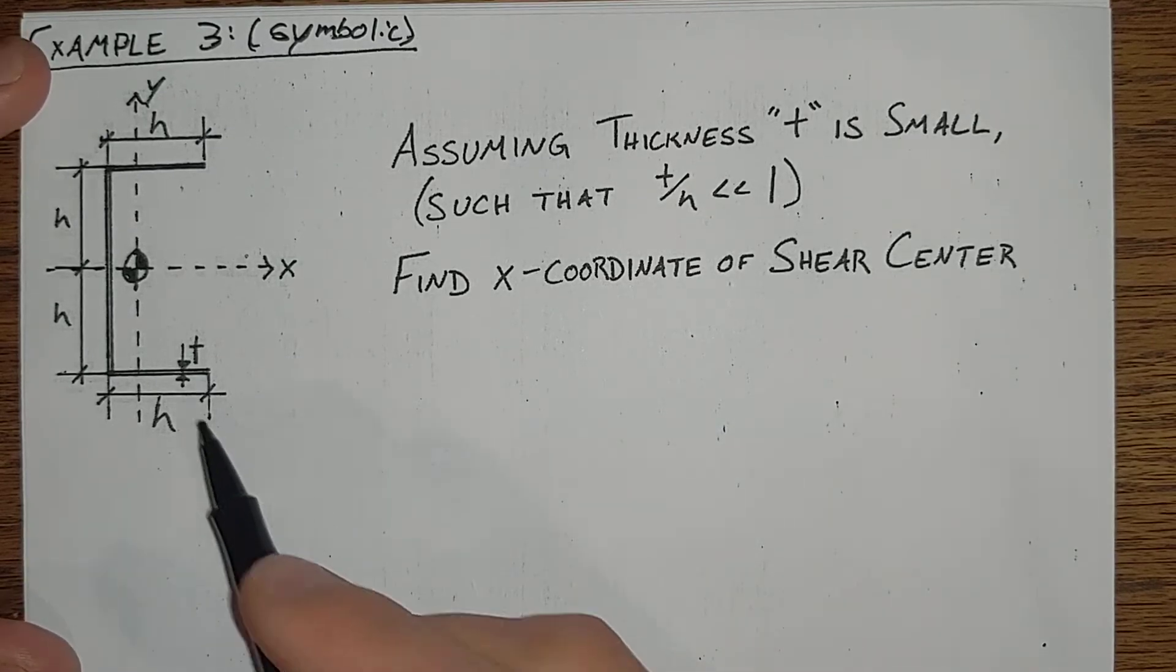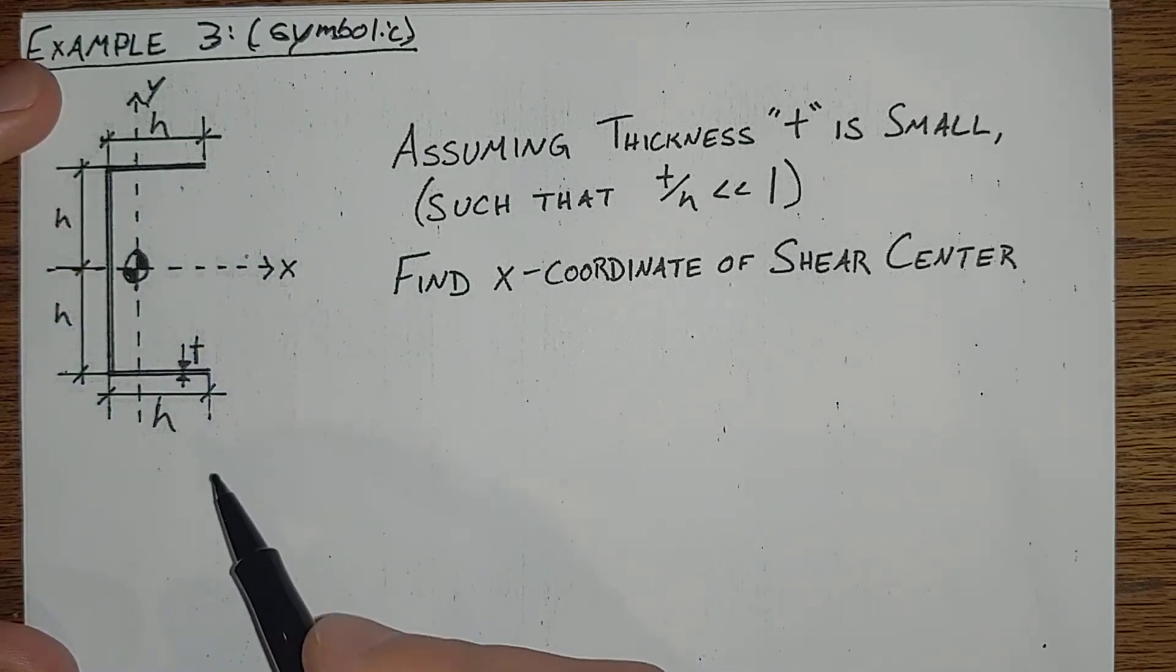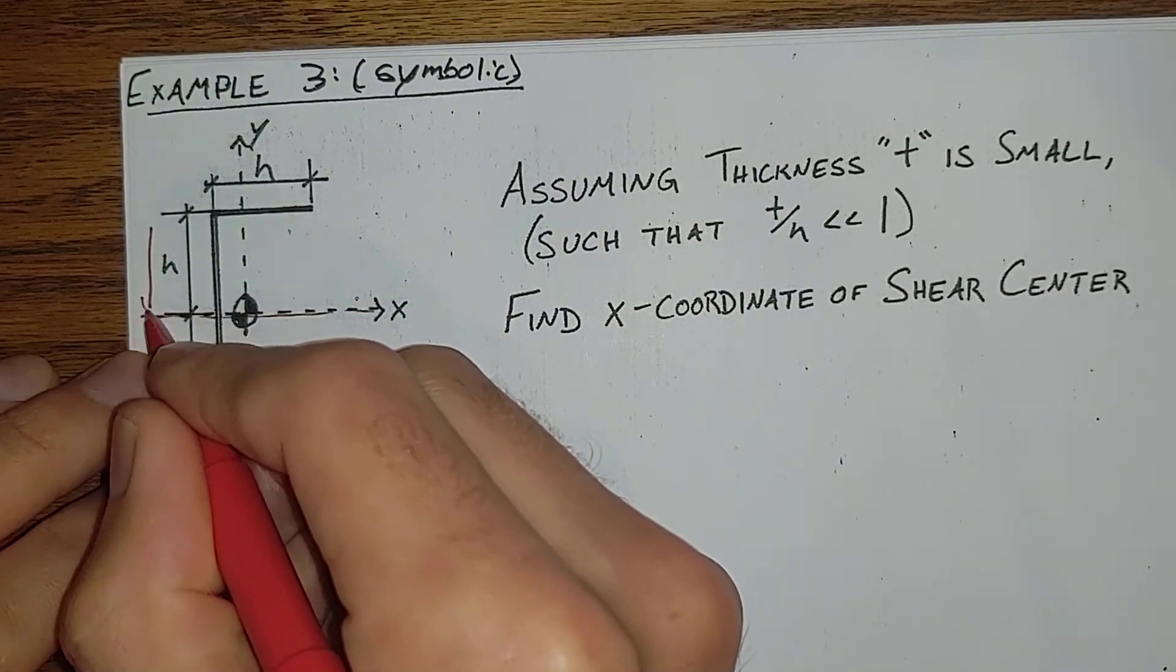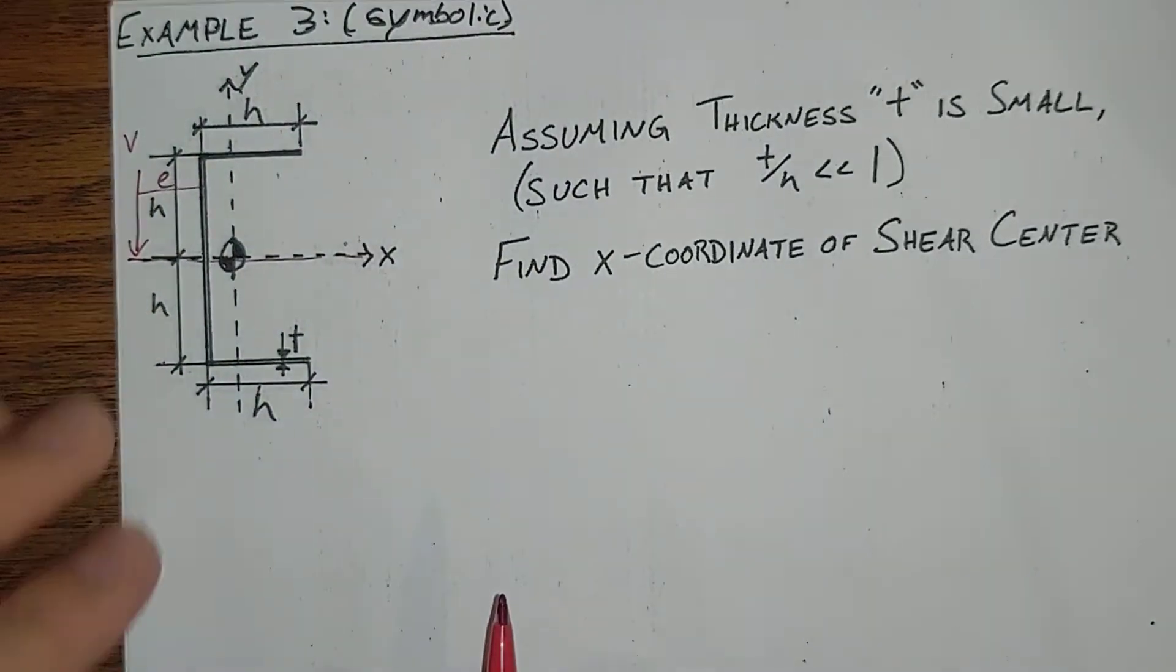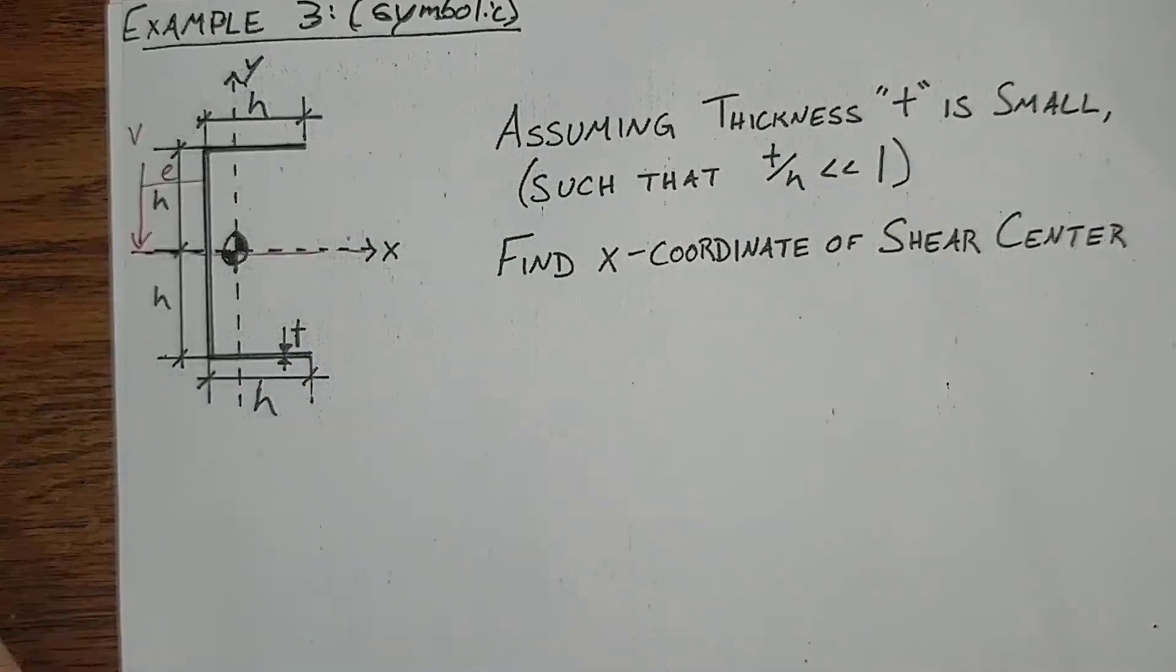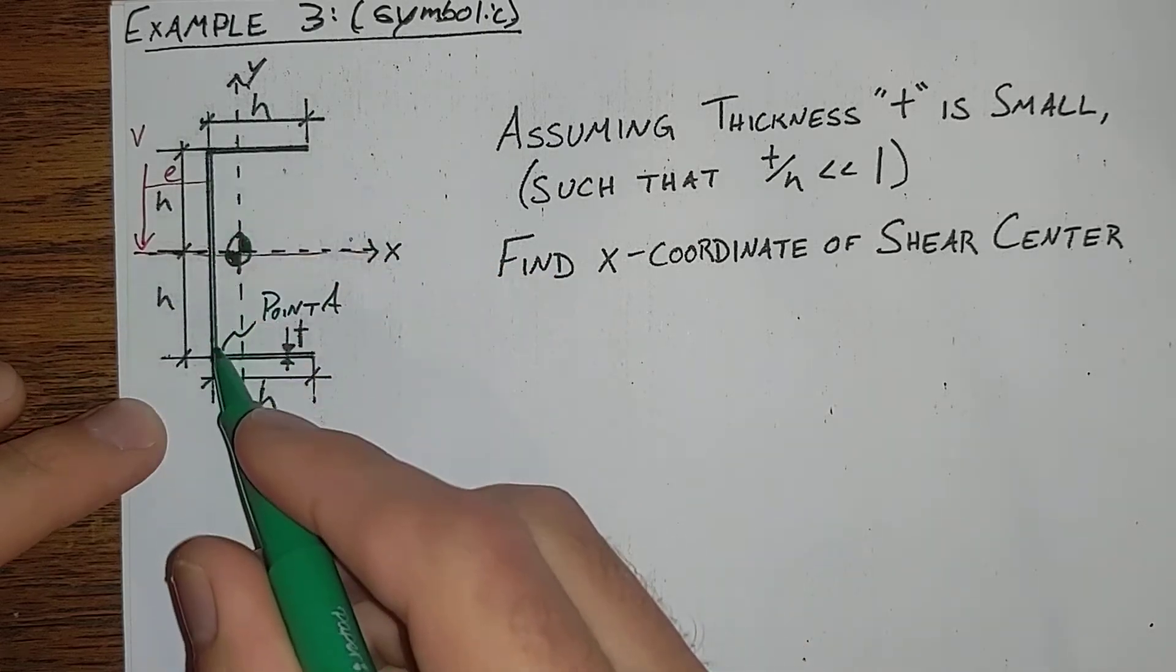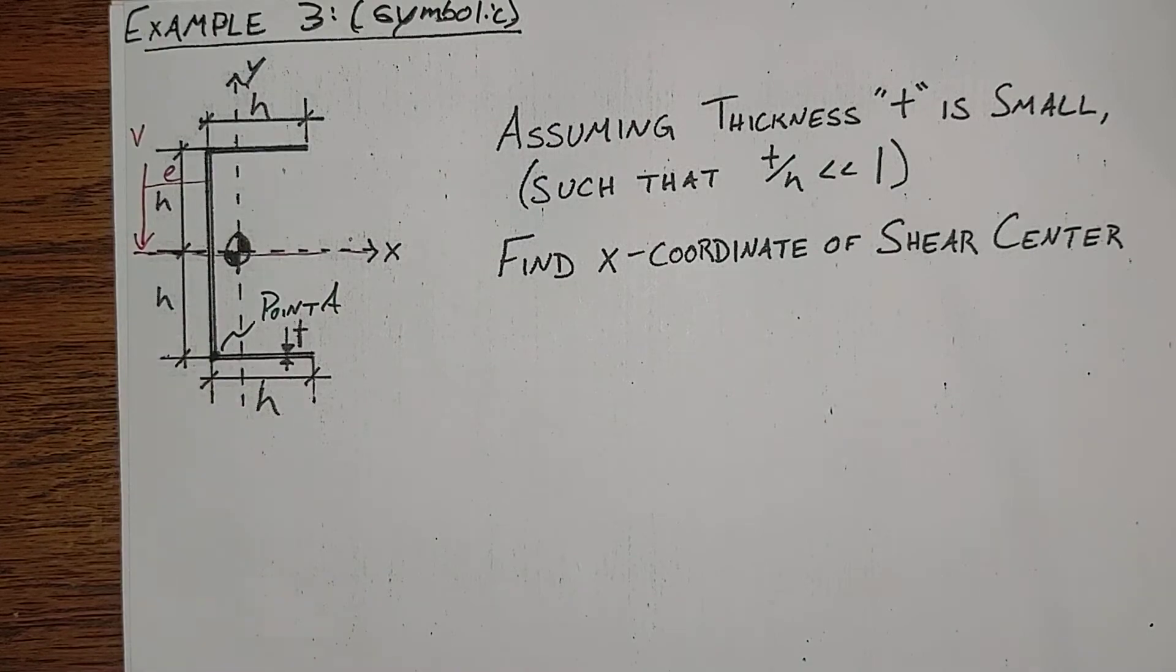So in this case, we're taking basically that same shape from example one again. We know, of course, that our shear center will be located on the x-axis, we have V occurring out here at some eccentricity. So again, sum of moments about a down here, we're going to start just the same, point A. We're choosing point A, so we don't have to worry about the vertical component here, we don't have to worry about the shear in the bottom.